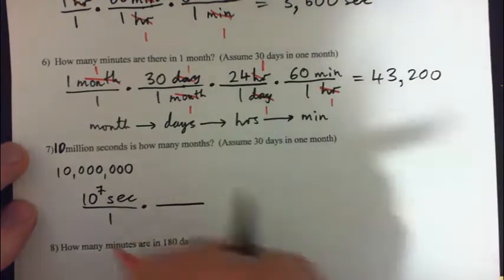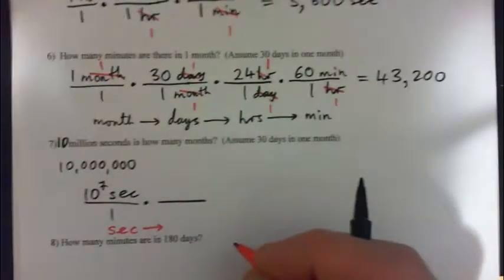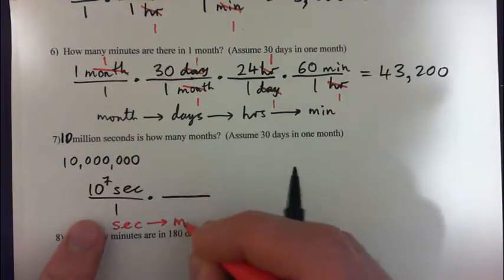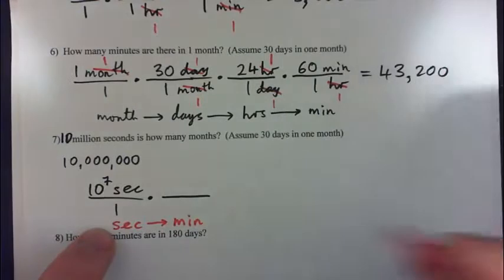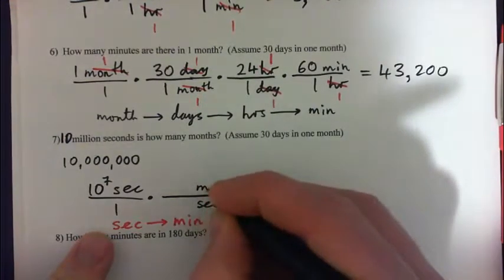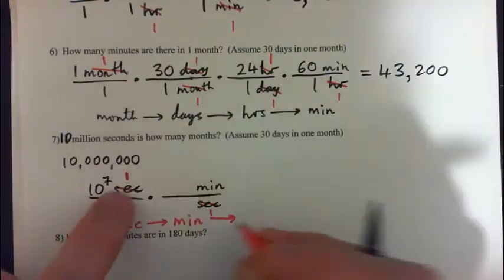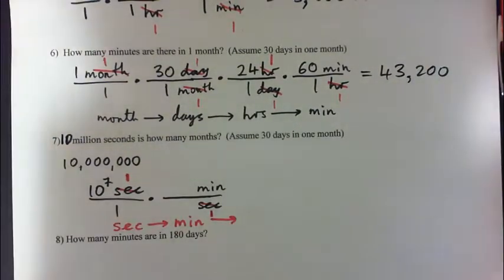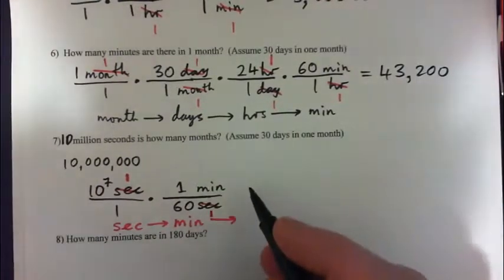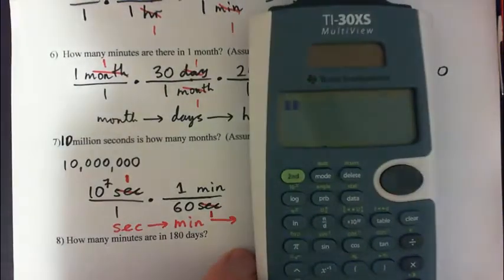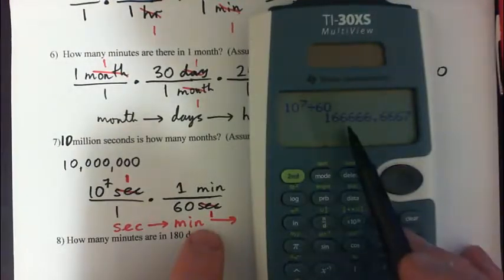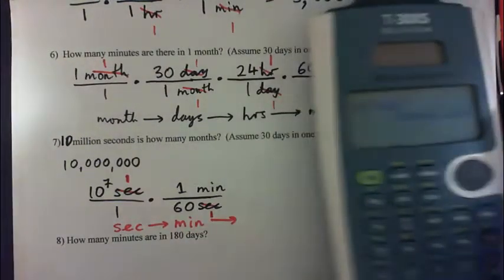We're going to convert up from seconds to months. First, convert seconds to minutes — put seconds in the denominator so they cross-cancel, and minutes in the numerator. In one minute there are 60 seconds. When the same quantity cross-cancels, you're left with a 1 — it doesn't just vanish. So 10 to the power of 7 divided by 60 gives about 167,000 minutes.